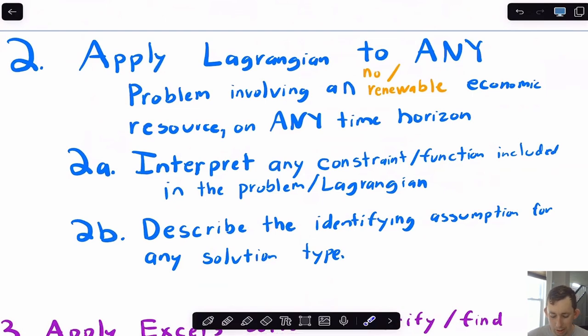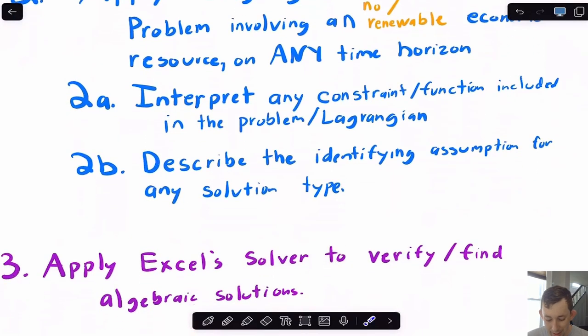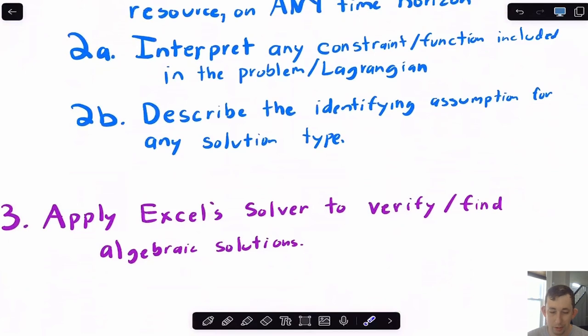Any time horizon, we're going to do both finite and infinite. And what we're going to do throughout is we're going to make sure that we understand how to interpret both the constraint on our problem as well as the objective function and just overall what those first order conditions mean. And we'll also talk about identifying the assumptions we need when we start to solve.